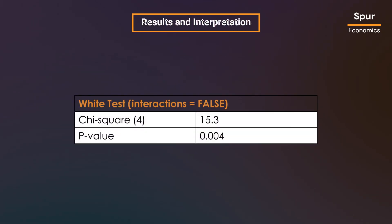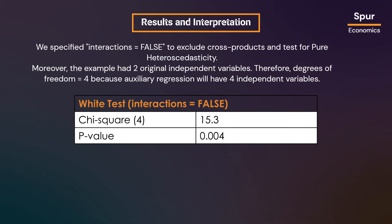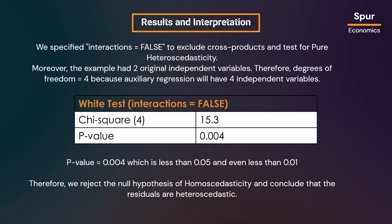The results of the test report the chi-square test statistic, degrees of freedom, and the p-value. In this hypothetical example, the chi-square statistic is 15.3 with interactions set to FALSE. The example had two original independent variables, giving four independent variables in the auxiliary regression and four degrees of freedom. The p-value of 0.004 is less than 0.01, so we reject the null hypothesis and conclude the residuals are heteroscedastic.